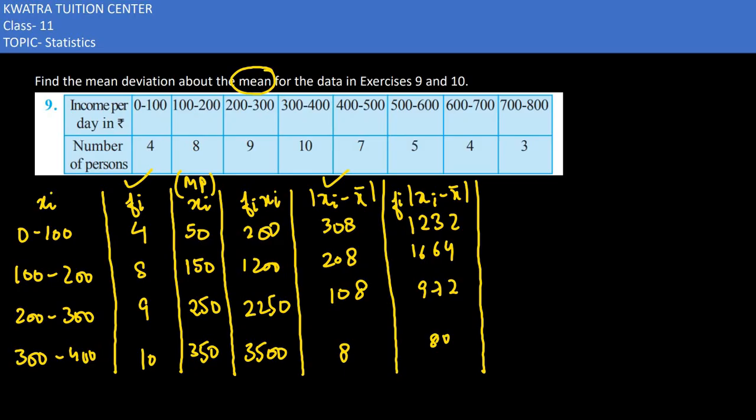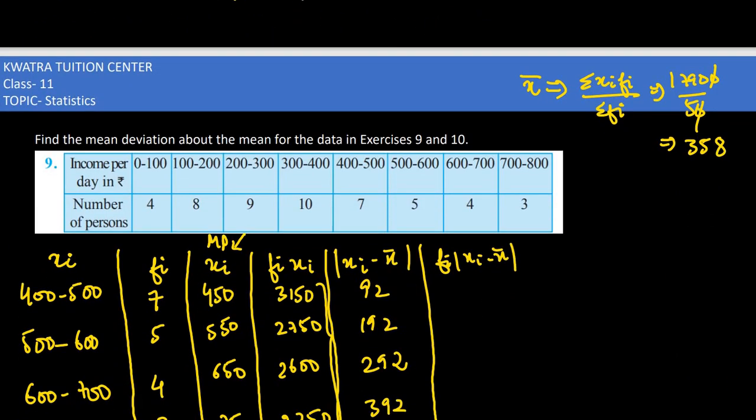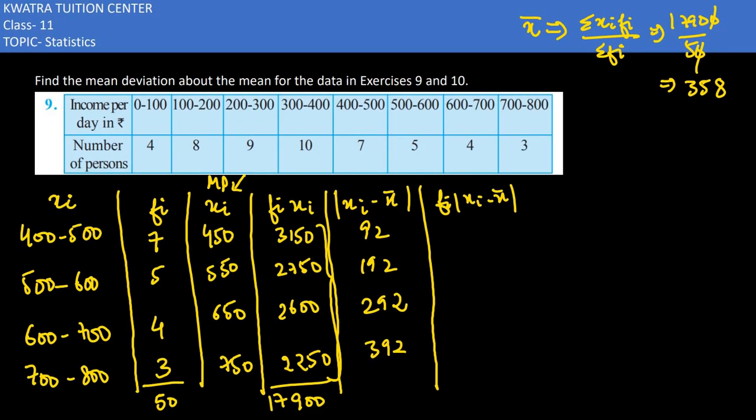Next 4. How many times? 92 into 7 would be 644. Then you have 960. Then you have 1168. Then if you take 3 times 392, then you would get 1176.